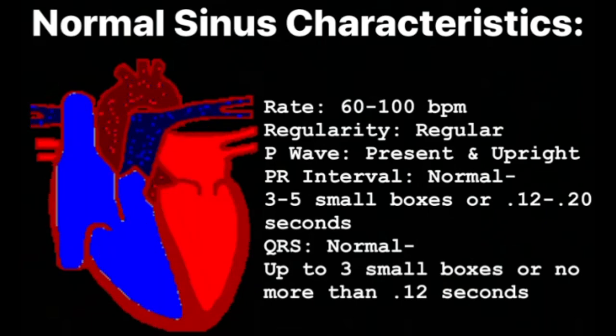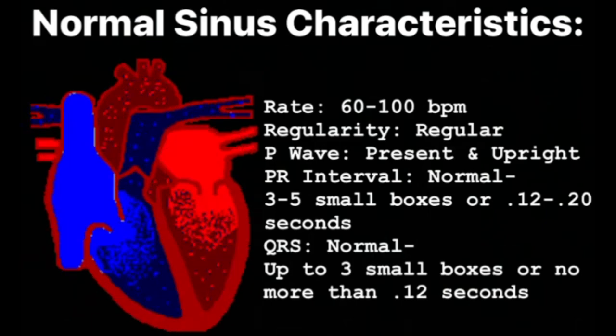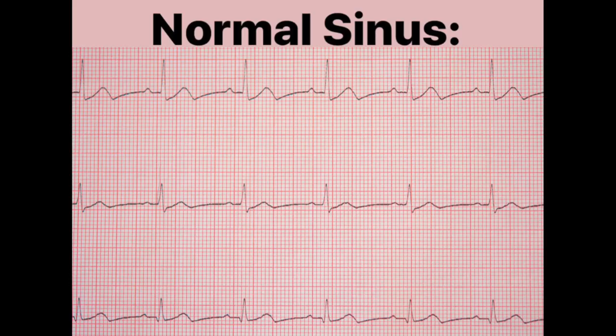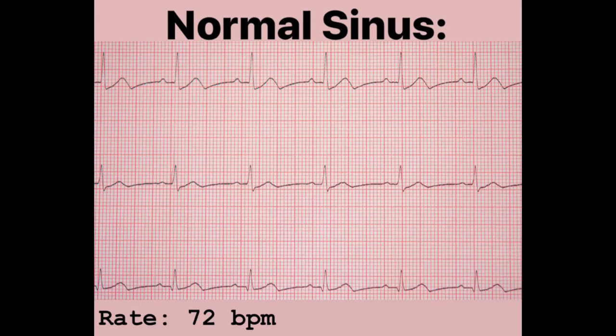Let's take a look at a normal sinus rhythm on an EKG strip. Taking a quick glance at this, everything looks pretty regular and everything looks like it's there, but let's go through our checklist and make sure it is normal sinus. The first thing we want to check is the rate. Our rate is going to be 72 beats per minute, which is normal — it falls within 60 to 100 beats per minute.